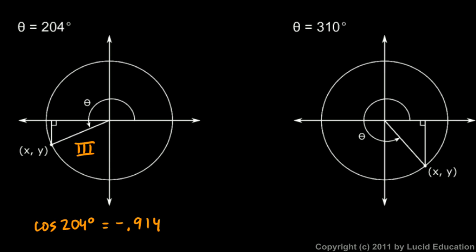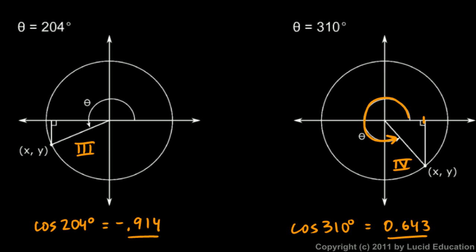Quadrant 3 gives a negative value for the cosine. And if we rotate all the way around into quadrant 4, with a 310 degree angle, the cosine of 310 degrees is 0.643. That's the x-coordinate of that point, and the thing to note here is that in quadrant 4 we have a positive value for the cosine.